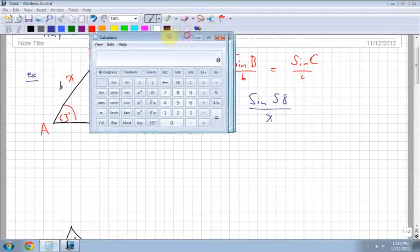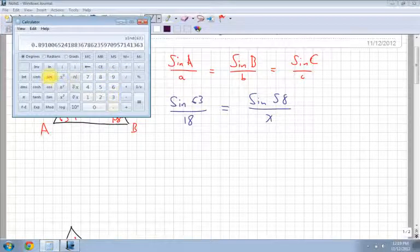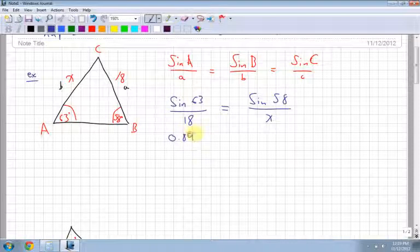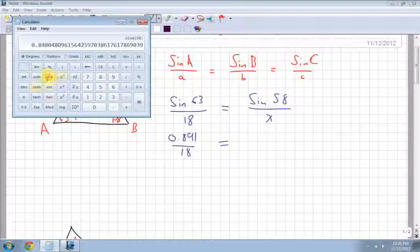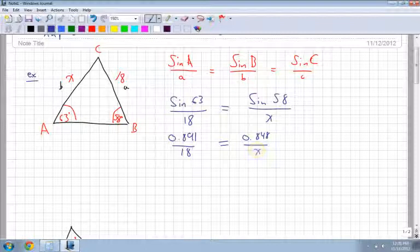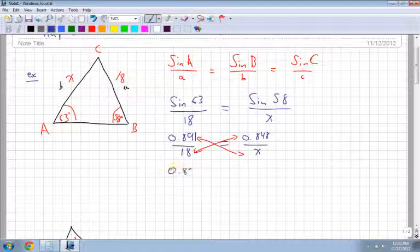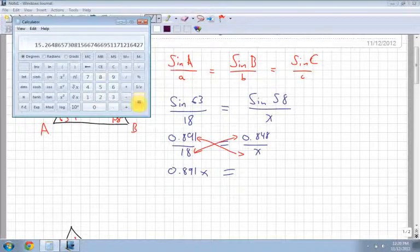Next thing I do is a bit of calculator work. I have to do sine 63 on calculator using degree mode. So I have 63, then I hit sine, so I get 0.891. So 0.891 divided by 18 is equal to sine of 58, which is 0.848 over x.